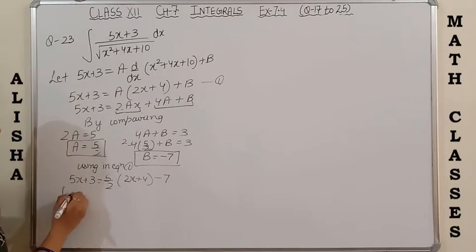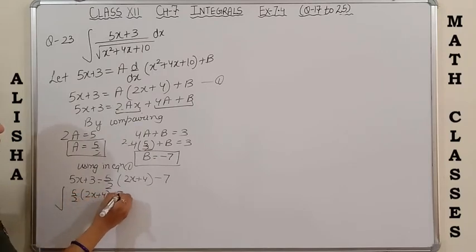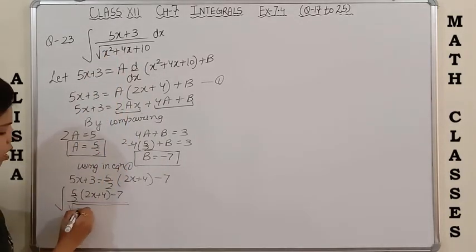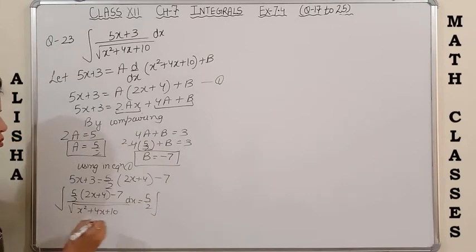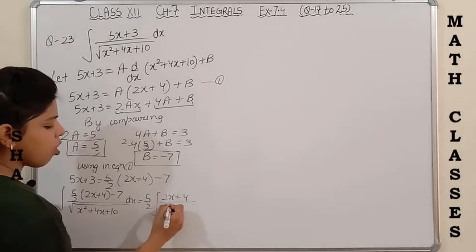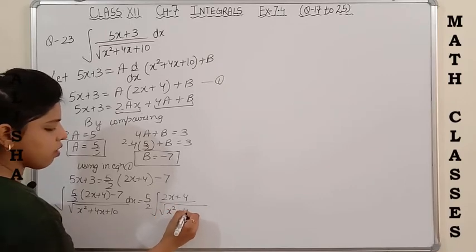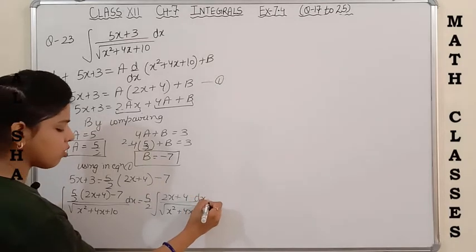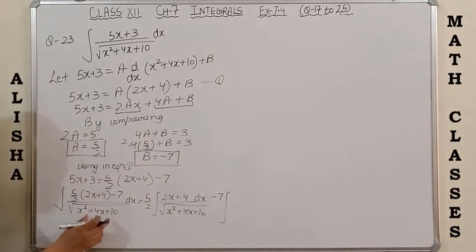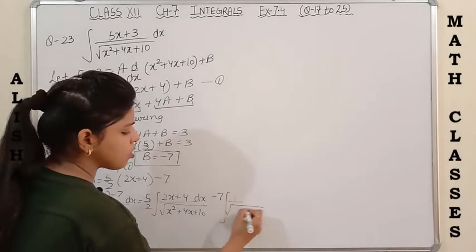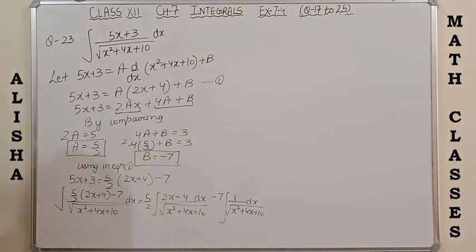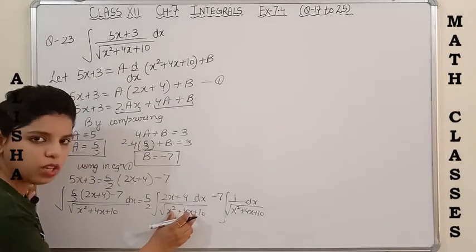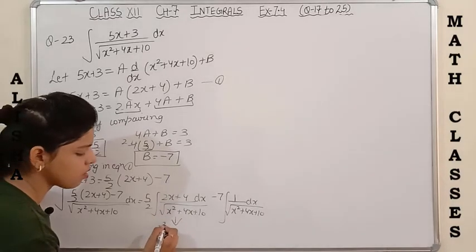Using these values in the given integral: integration of [(5/2)(2x+4) - 7] upon √(x²+4x+10) dx. The first integral is of the form f'(x)/f(x) under a root. The second integral has -7 as a constant taken outside, giving 1 upon √(x²+4x+10) dx. For the first part, let x²+4x+10 = t², so (2x+4)dx = 2t dt, to remove the square root.